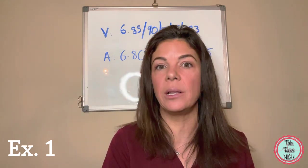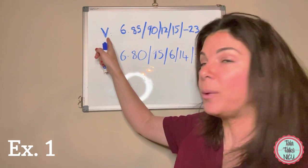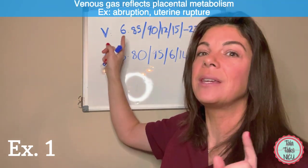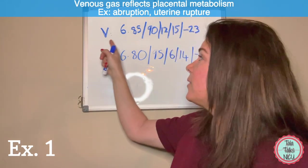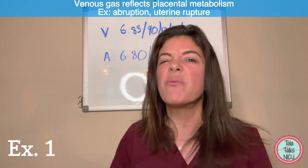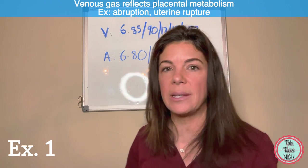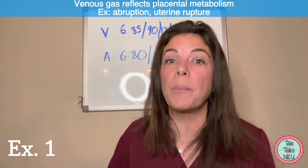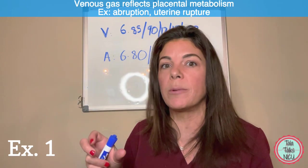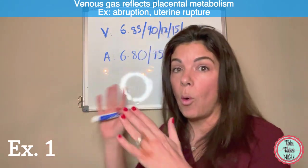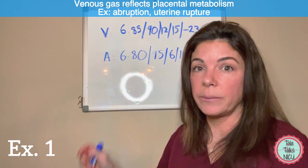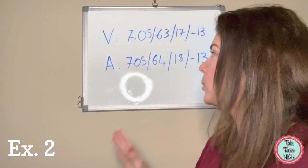What could have actually caused this? Because the venous as well as the arterial cord gases are both so bad, this is probably likely to have been placental in origin, because the venous gas reflects the placental metabolism. Even the venous is really bad here, so something really bad must have happened with the placenta. Maybe there was an abruption where the placenta literally got ripped off the wall of the uterus, or there was a uterine rupture or something.